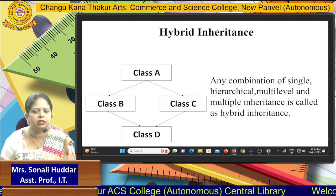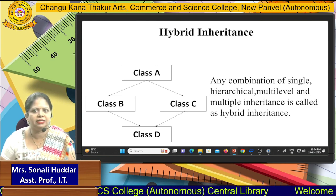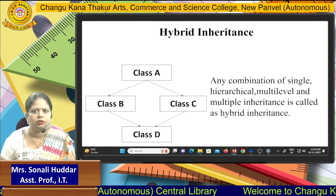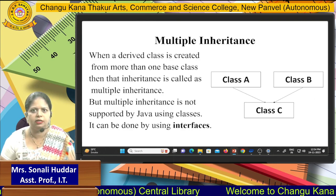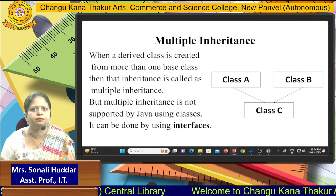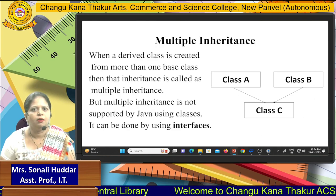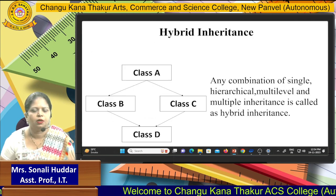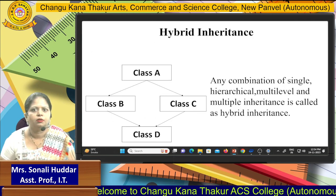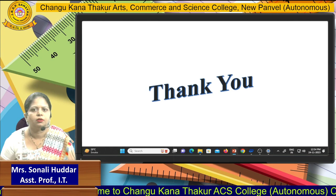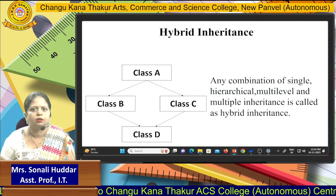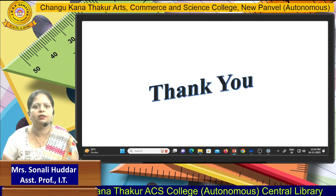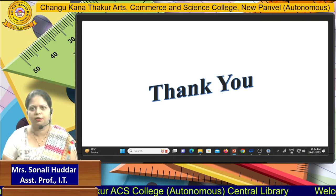Class B and class C then work as base classes for class D, making that portion an example of multiple inheritance. This combination is what makes it hybrid inheritance. That covers everything related to inheritance. Thank you so much.